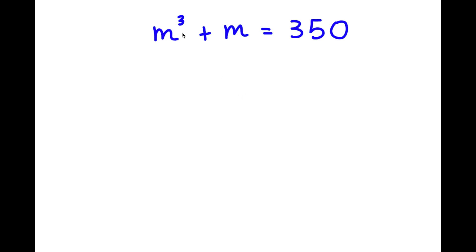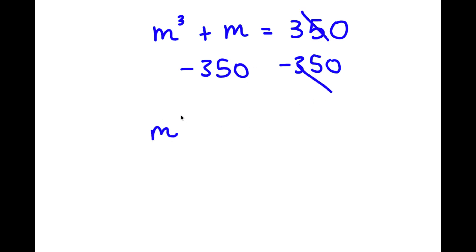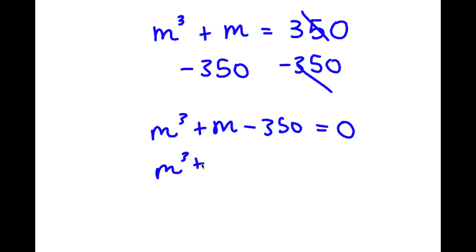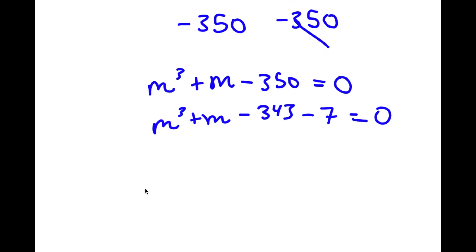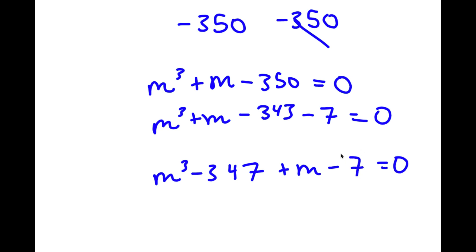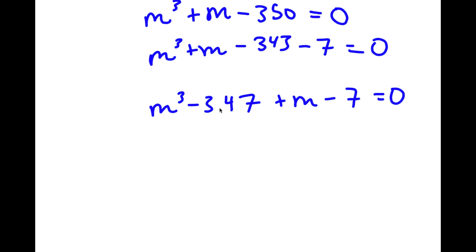In this problem I have m to the power of 3 plus m is equal to 350. The first thing I'm going to do is subtract 350 on both sides. So now I have m to the power of 3 plus m minus 350 is equal to 0. I can rewrite 350 as negative 343 minus 7. So now I have m to the power of 3 minus 343 plus m minus 7 is equal to 0. And m to the power of 3 minus 343 is the same thing as m to the power of 3 minus 7 to the power of 3.